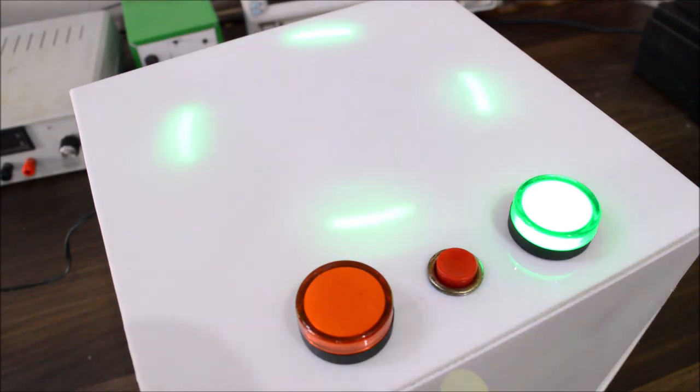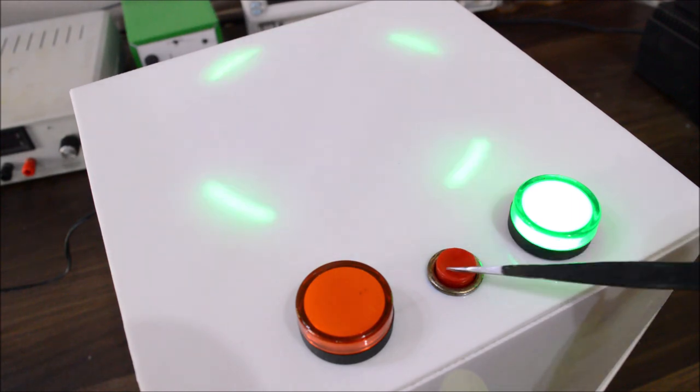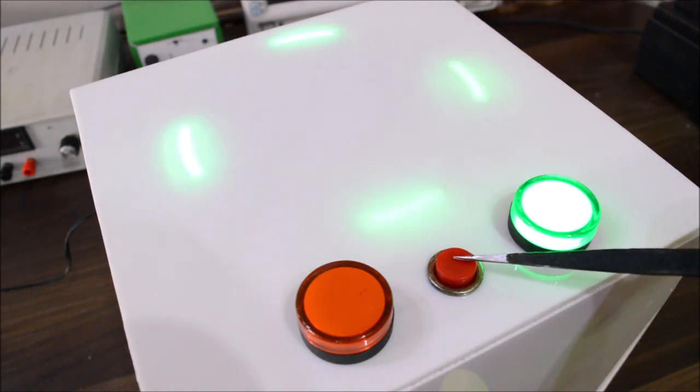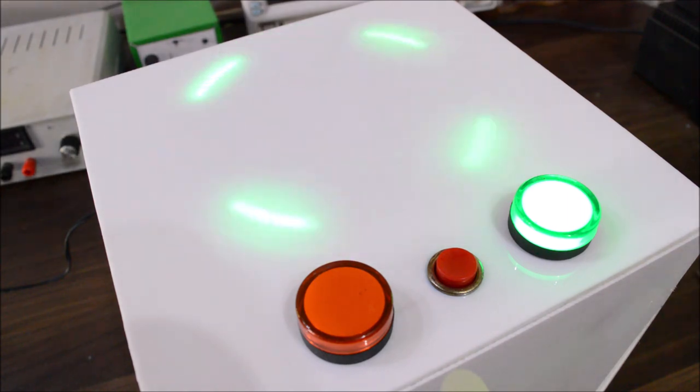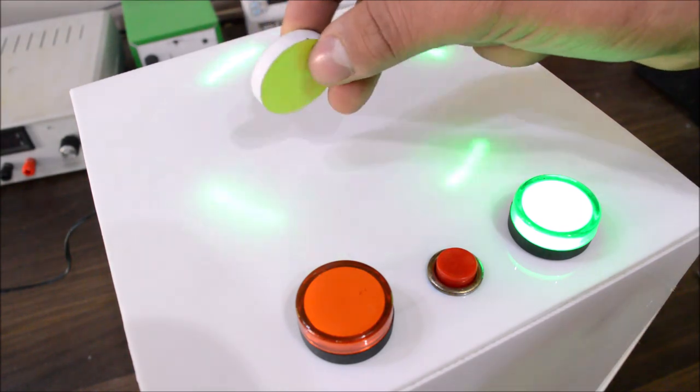The moment you press this button, the wheel stops spinning and now you have only eight seconds to place this circular thing, which is actually a magnet, in front of the LED. So let's play with this thing so you can understand a bit better.